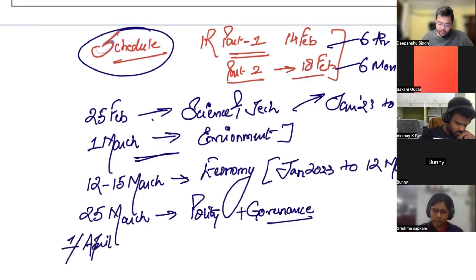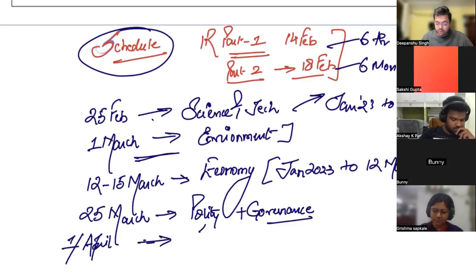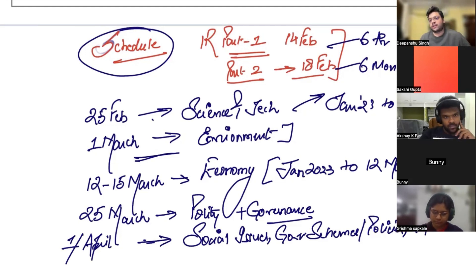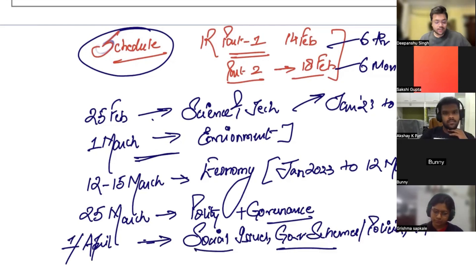Then the polity and governance compilation will come. And finally, around April 1st or 2nd, we will have some topics like social issues, government schemes, and reports. Reports are kept last because it's a rote-learning topic — either you remember it or you don't.